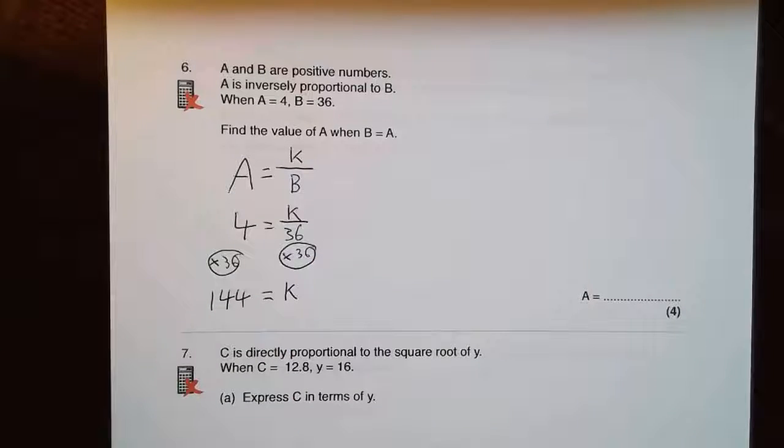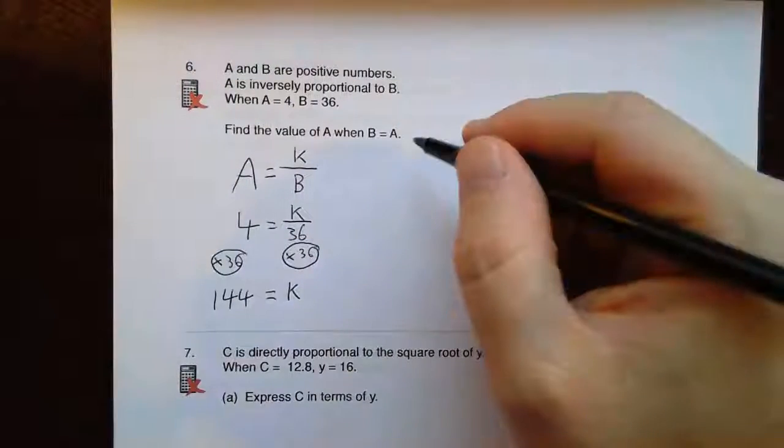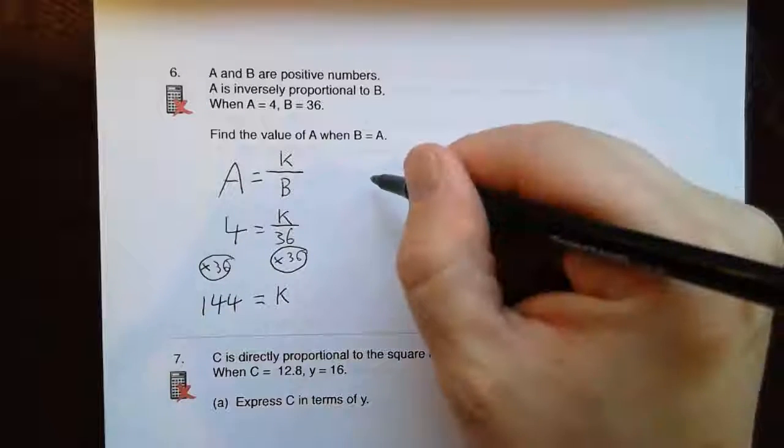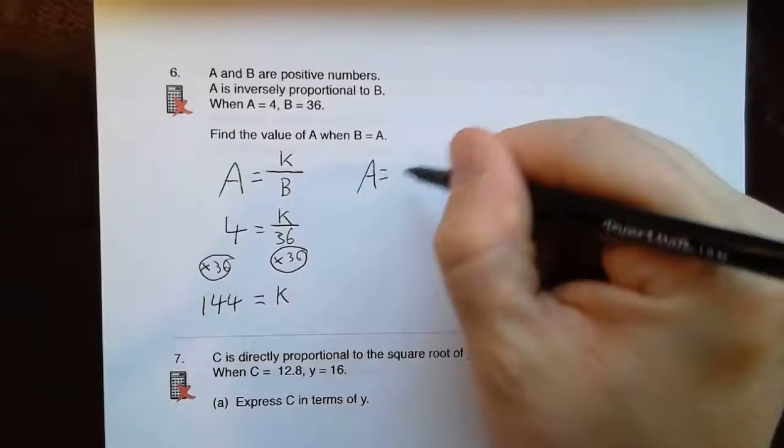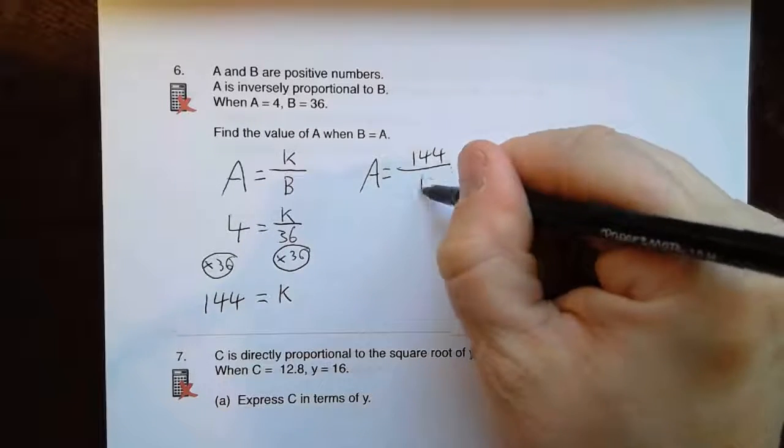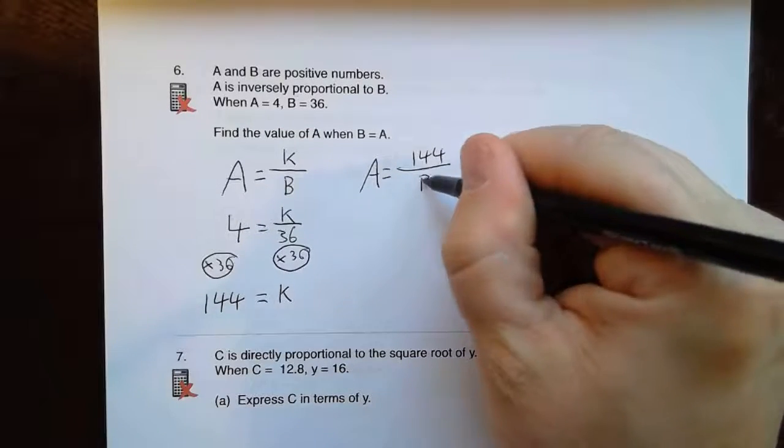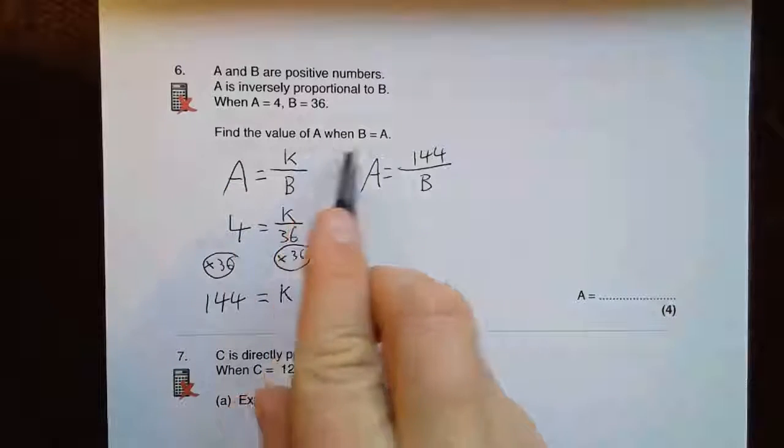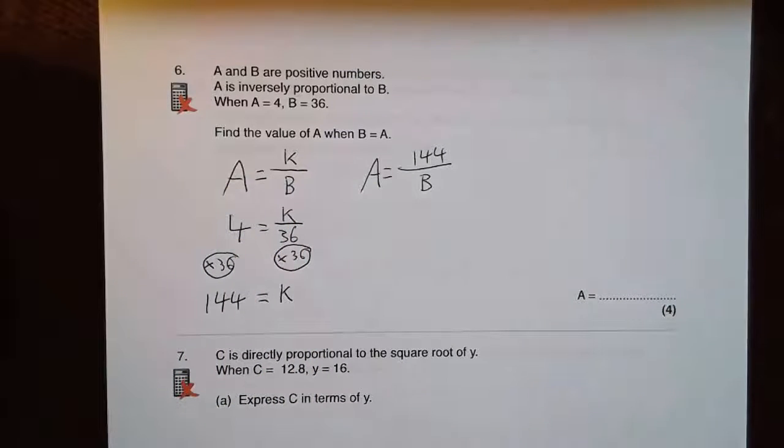So k is 144. Let's rewrite this out. So A equals 144 over B. So find the value of A when B equals A. Alright, find the value of A when B equals A.